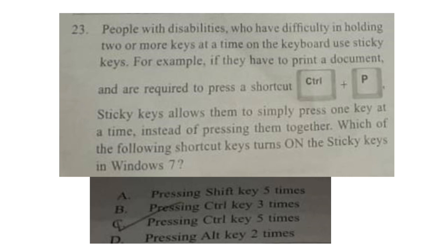Question 23: People with disabilities who have difficulty holding two or more keys at a time on the keyboard use sticky keys. For example, if they have to print a document and are required to press Ctrl + P, sticky keys allows them to simply press one key at a time instead of pressing them together. Which shortcut key turns on sticky keys in Windows 7? The correct answer is option A — pressing the Shift key five times.